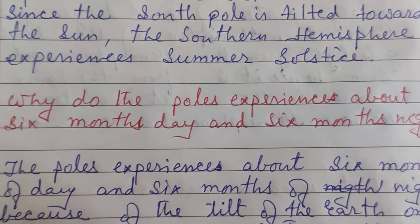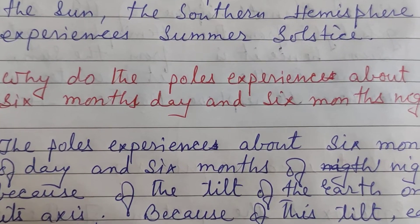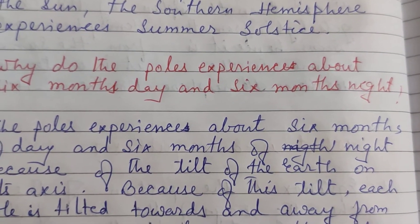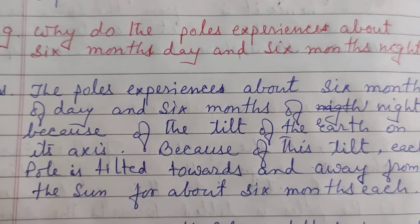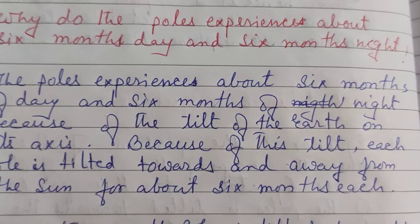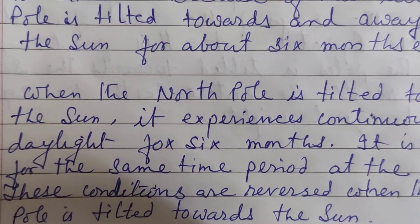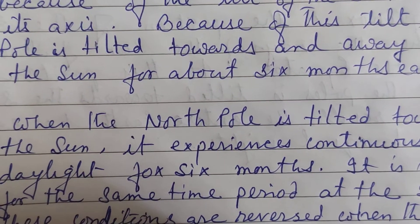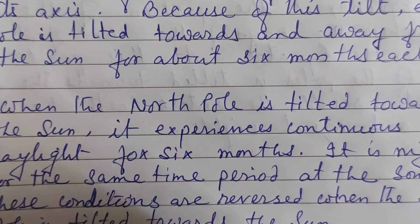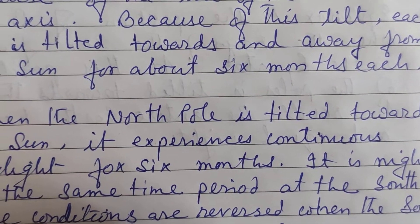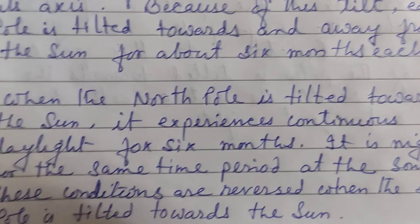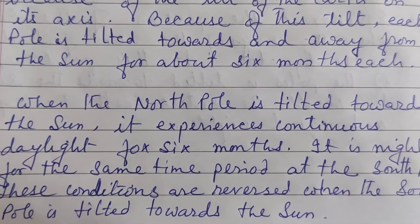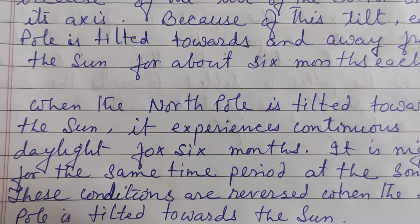Why do the poles experience about 6 months of day and 6 months of night? The poles experience about 6 months of day and 6 months of night because of the tilt of the Earth on its axis. Because of this tilt, each pole is tilted towards and away from the Sun for about 6 months each. When the North Pole is tilted towards the Sun, it experiences continuous daylight for 6 months, while the South Pole experiences continuous night. These conditions are reversed when the South Pole is tilted towards the Sun — it experiences 6 months of day, while the North Pole has 6 months of night.